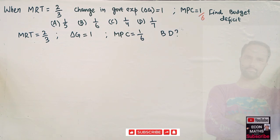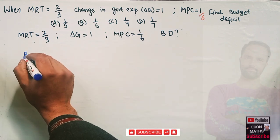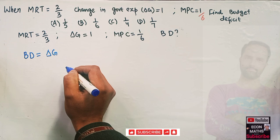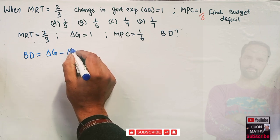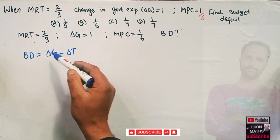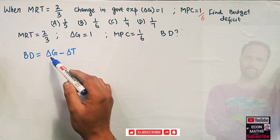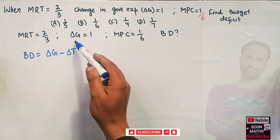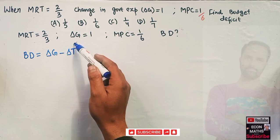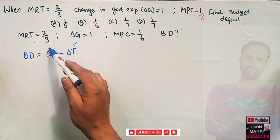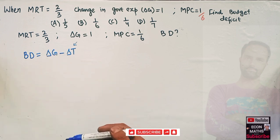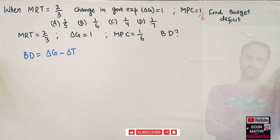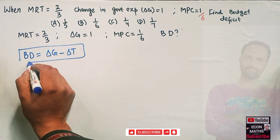Budget deficit is equal to change in government expenditure minus change in taxes — this is total government expenditure minus total tax revenue. So budget deficit = ΔG − ΔT. If government revenue is greater than expenditure, we have a budget surplus; if government expenditure is greater than total tax revenue, we have a budget deficit.